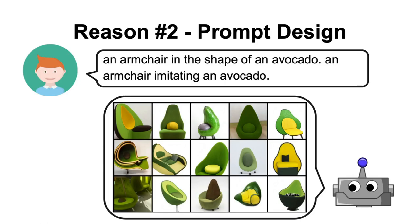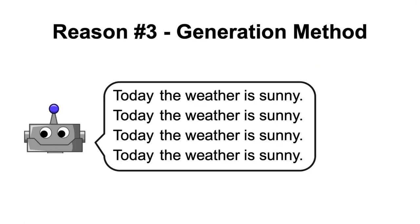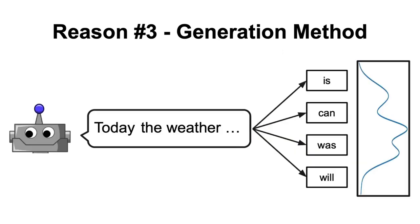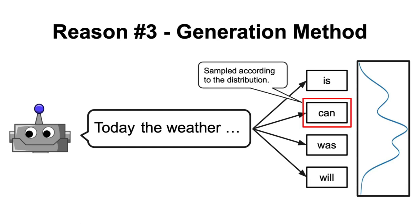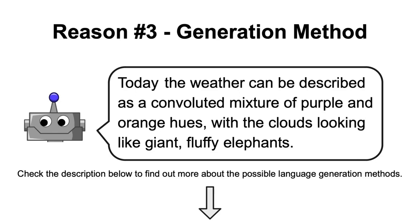Another cause of hallucination is the method employed to generate text. Simply taking the most probable word at each iteration usually produces repetitive sentences, and research has shown that the way humans speak is much more surprising than greedy or beam search algorithms. So what is happening instead is that at each point in the generation process, a word is sampled according to the probability distribution at that time. Therefore, by using this approach, the language model becomes more creative, but it can also surprise us in negative ways and produce text that doesn't make any sense. I've added a beautiful article in the description about the various methods used to generate text and how they can affect the final outcome.